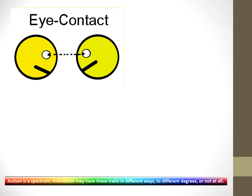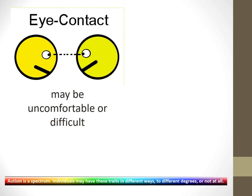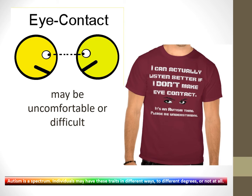Eye contact may be uncomfortable or difficult for autistic people. When you have a conversation, the organs you're using are your mouth and your ears, so it can seem illogical and distracting to insist that you lock eyes as well. This t-shirt says: I can actually listen better if I don't make eye contact. It's an autism thing. Please be understanding.